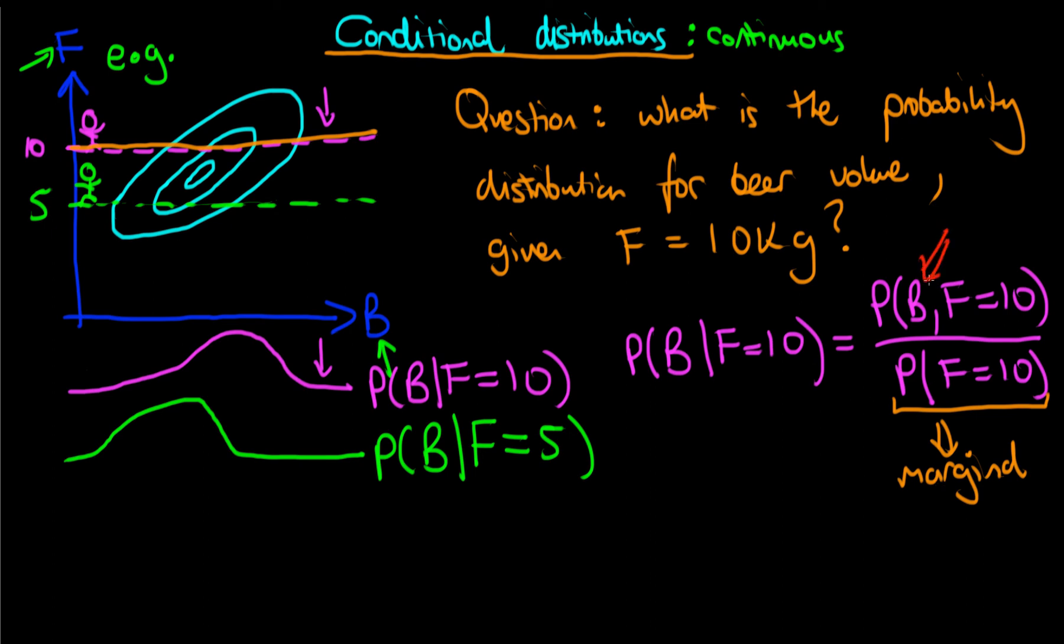And then this thing at the top here is the joint distribution, which is actually a function here. And so what we get out is we get out a probability distribution function which represents our conditional.